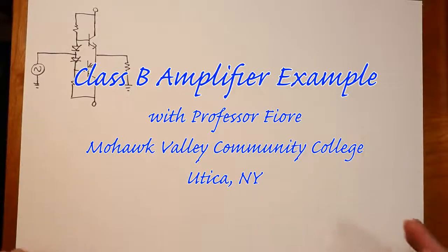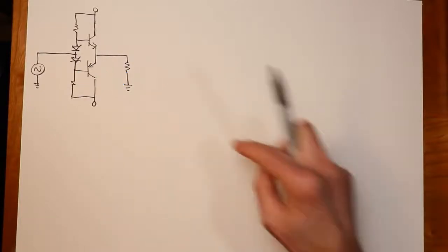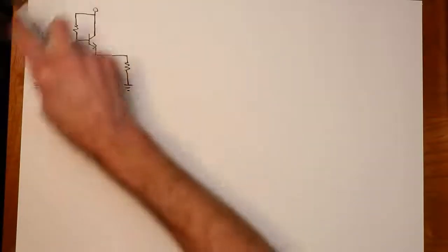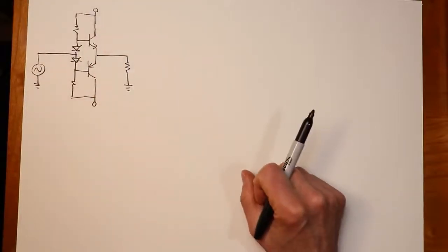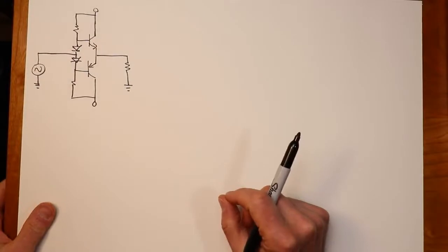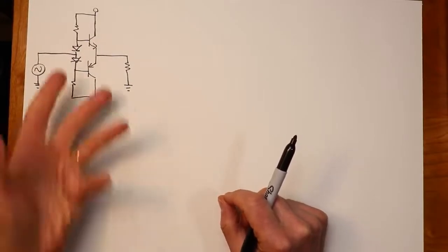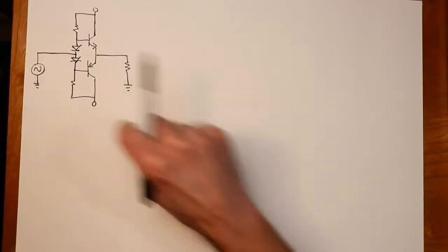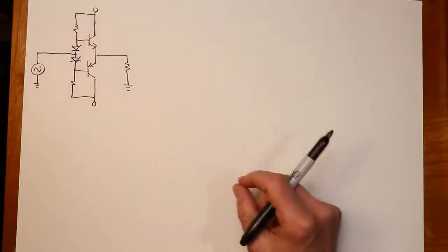And we're back for part two of our class B amplifier investigation. So here we have a little circuit. This is sort of where we left off last time. We want to run through this with some numbers, see what we get out of it. There's a couple items we need to investigate that we didn't look at in the first video.